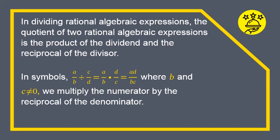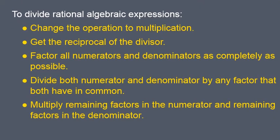In dividing rational algebraic expressions, the quotient of two rational algebraic expressions is the product of the dividend and the reciprocal of the divisor. In symbols, a over b divided by c over d is equal to a over b times d over c, which equals ad over bc, where b and c are not equal to zero. We multiply the numerator by the reciprocal of the denominator. Here are the steps in dividing rational algebraic expressions: First, change the operation to multiplication. Next, get the reciprocal of the divisor. Third, factor all the numerators and denominators as completely as possible. Fourth, divide both numerator and denominator by any common factor — you can use cancellation. And last, multiply the remaining factors in the numerator and remaining factors in the denominator.